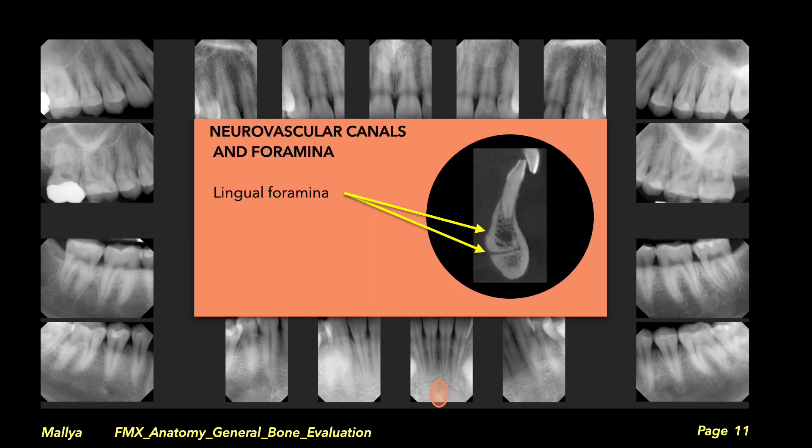In the anterior mandible, you may note the opening of the lingual foramen projected between the incisor roots. Due to its small size, it may not be seen, and it is typically not confused with pathology.